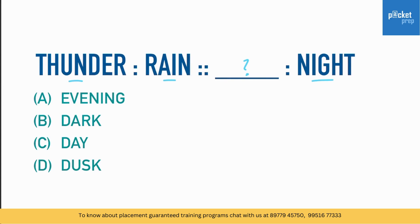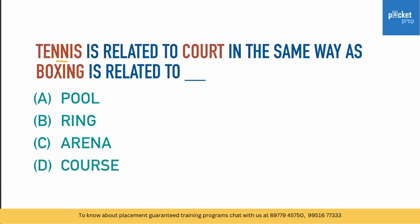Here is the second question: Thunder, Rain, unknown, and Night. Look at the first two words — thunder and rain. What happens first — is it the thunder or the rain? Yes, it is thunder. Thunder is followed by rain, so the relation is that one follows the other. In a similar manner, what precedes the night? It is evening — after evening we have night.